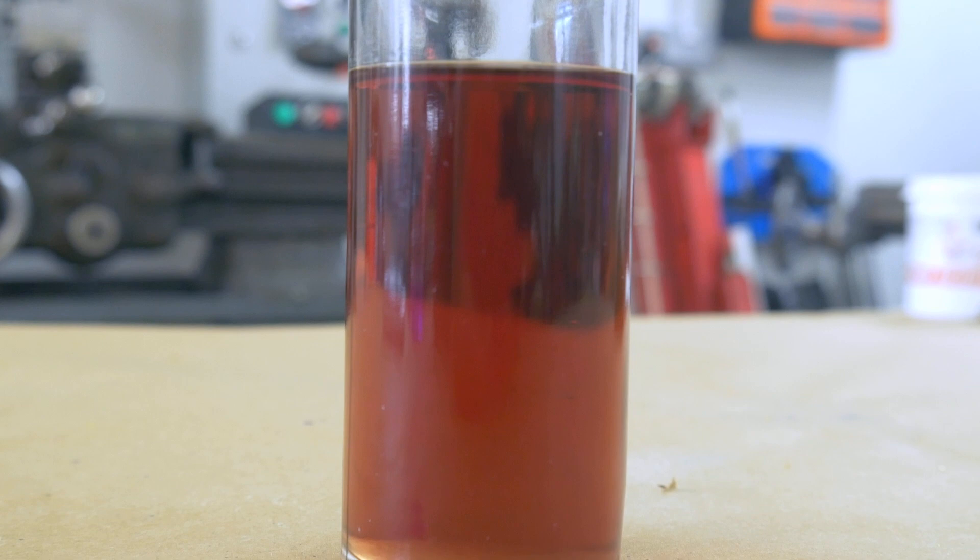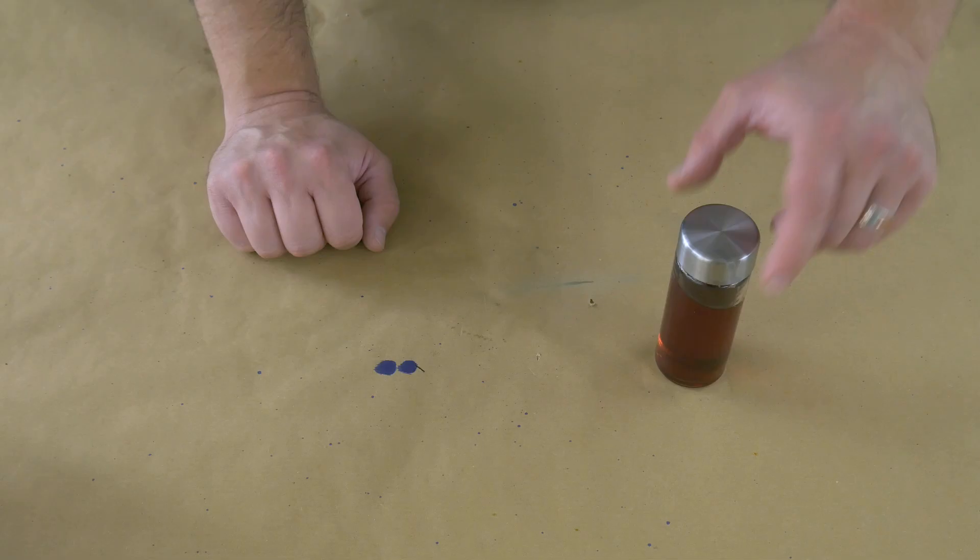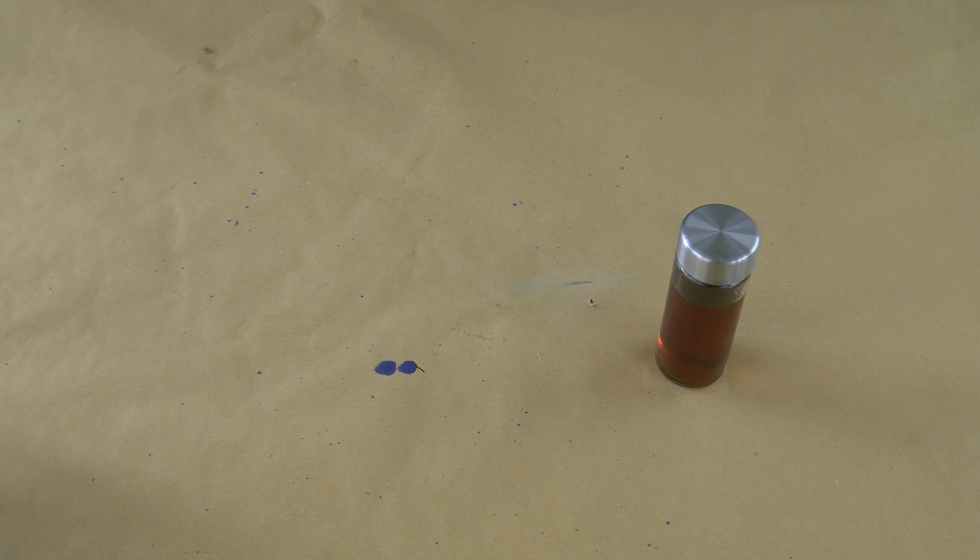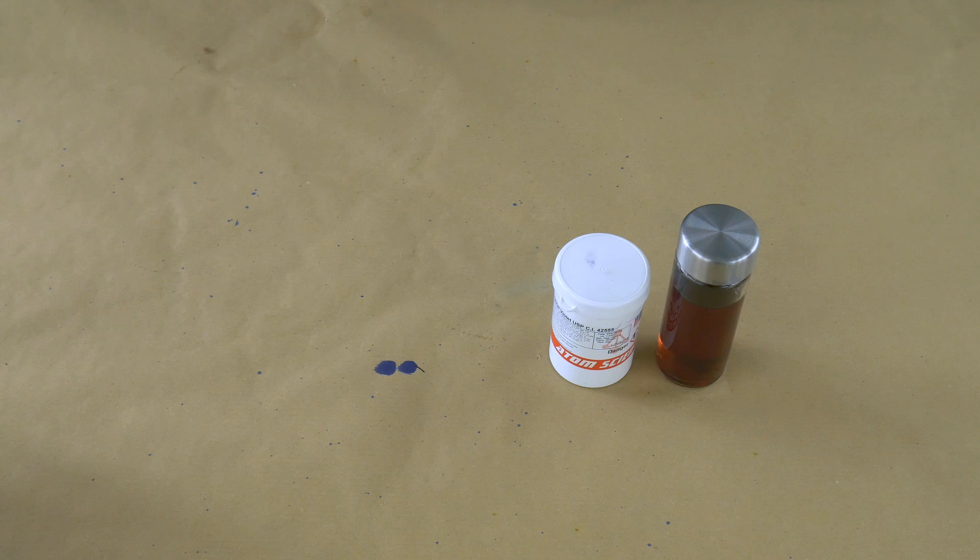This is what we're left with after about half an hour, 45 minutes or so. And it's come out as a nice kind of amber color. But that's not what we're aiming for. We want blue. And for that, we're going to need our pigment. This is the crystal violet, basic violet, gentian violet, whatever you want to call it.